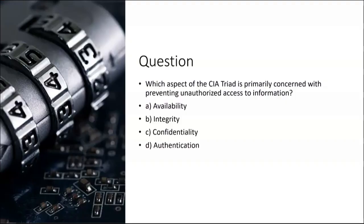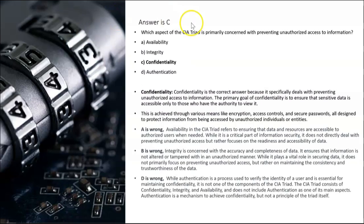Practice question: Which aspect of the CIA triad is primarily concerned with preventing unauthorized access to information? The options are availability, integrity, confidentiality, or authentication. Note that authentication is not even one of the CIA triad components. The answer is confidentiality — letter C.